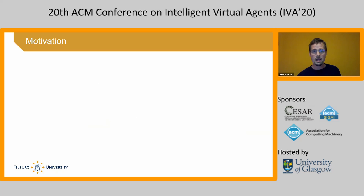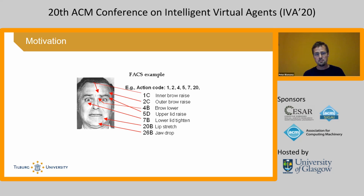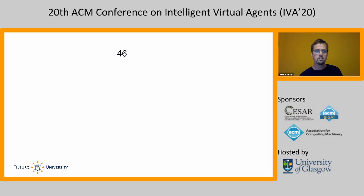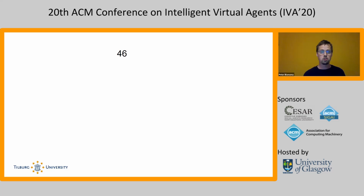We went into the literature and found the Facial Action Coding System, FACS, which is probably well known by everybody. FACS is widely used to identify and quantify facial expressions and to transfer those facial expressions onto an avatar. We found that FACS defines 46 facial muscles, and each can be contracted on a level from zero to five — zero being neutral and five being the most extreme contraction possible.